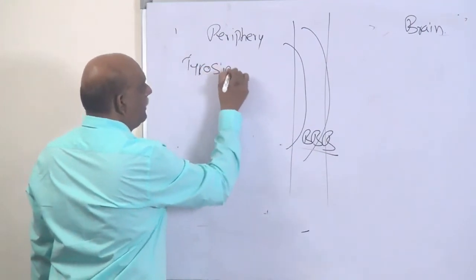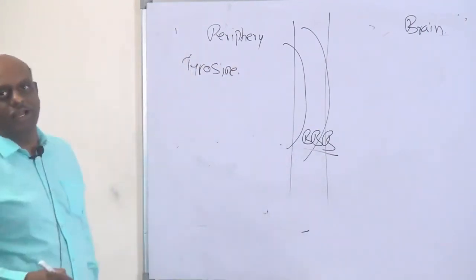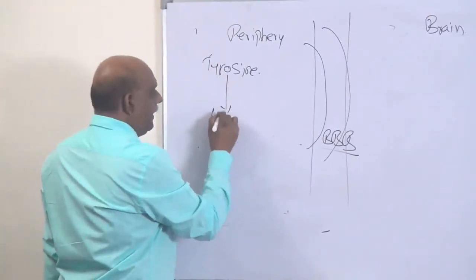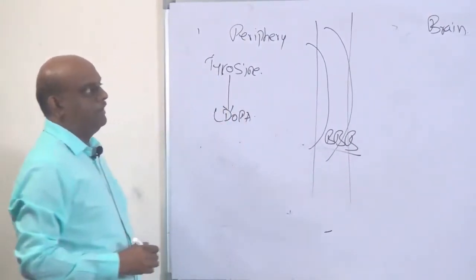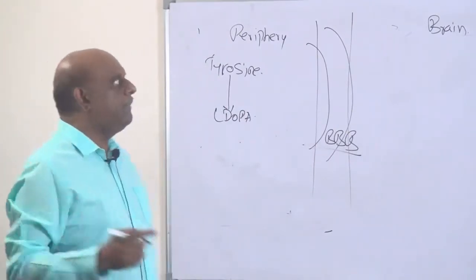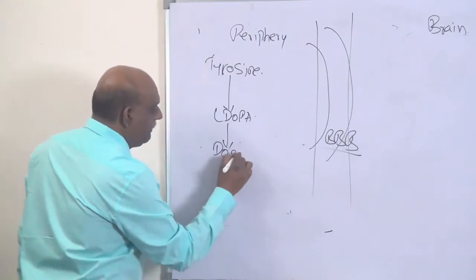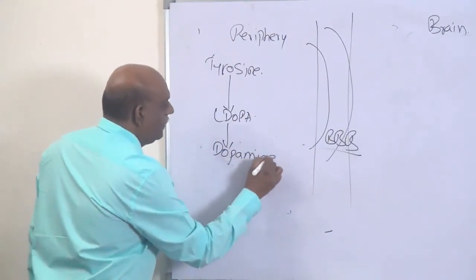Tyrosine becomes L-dopa. L-dopa becomes dopamine, dopamine is what you need to remember.